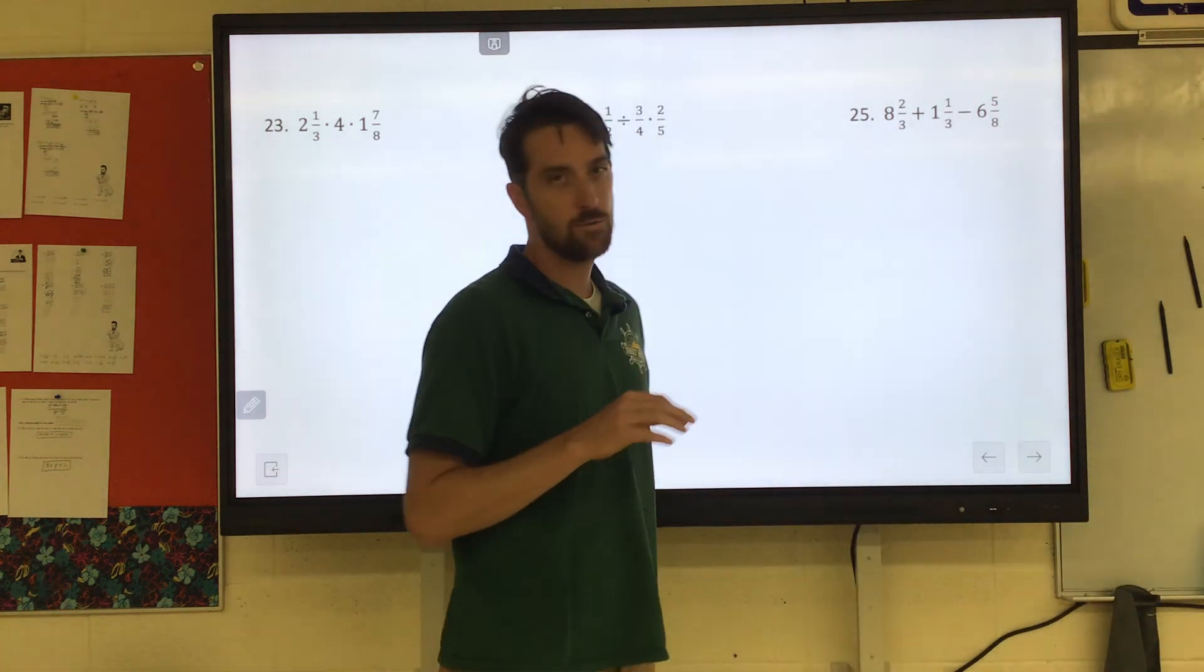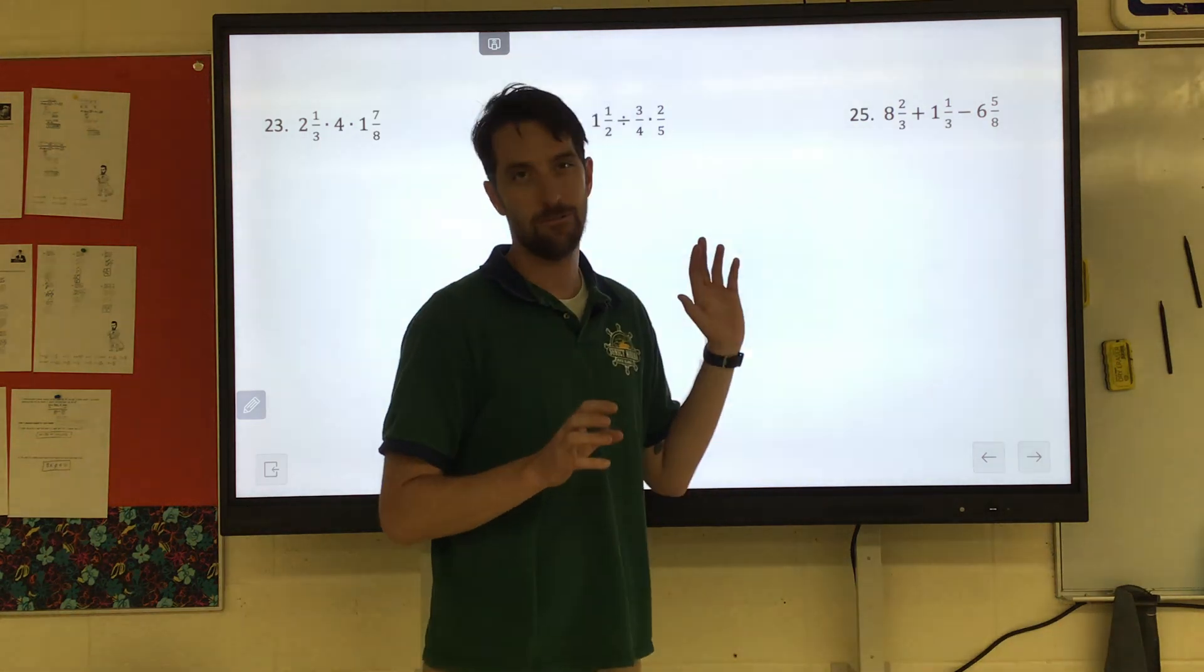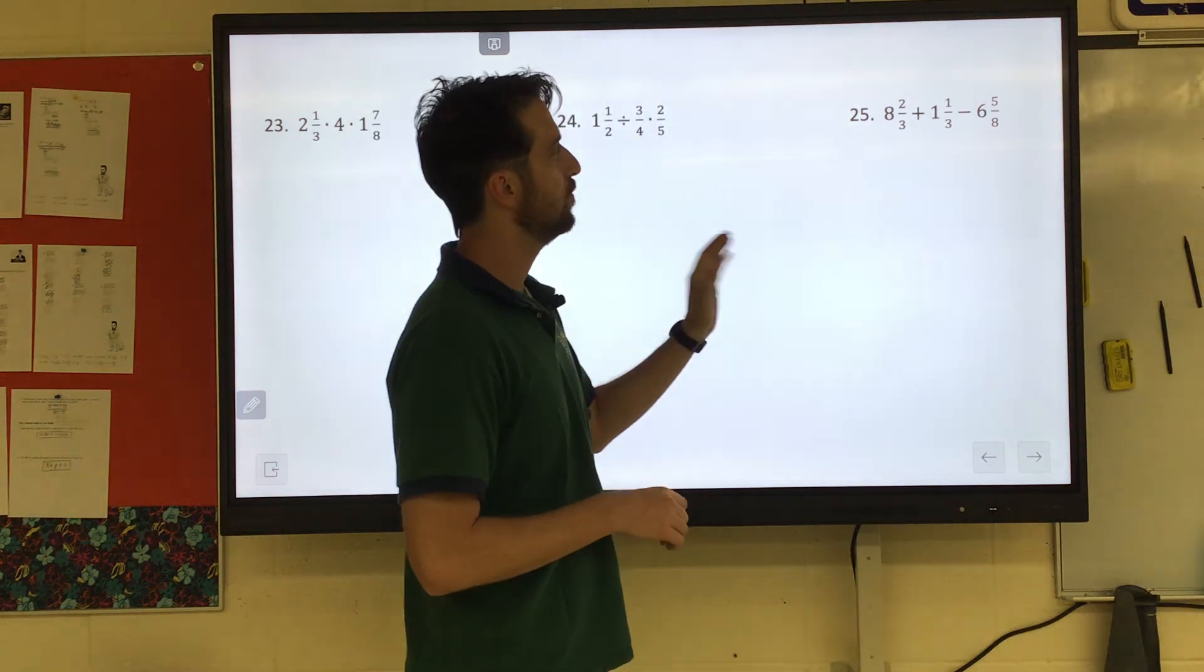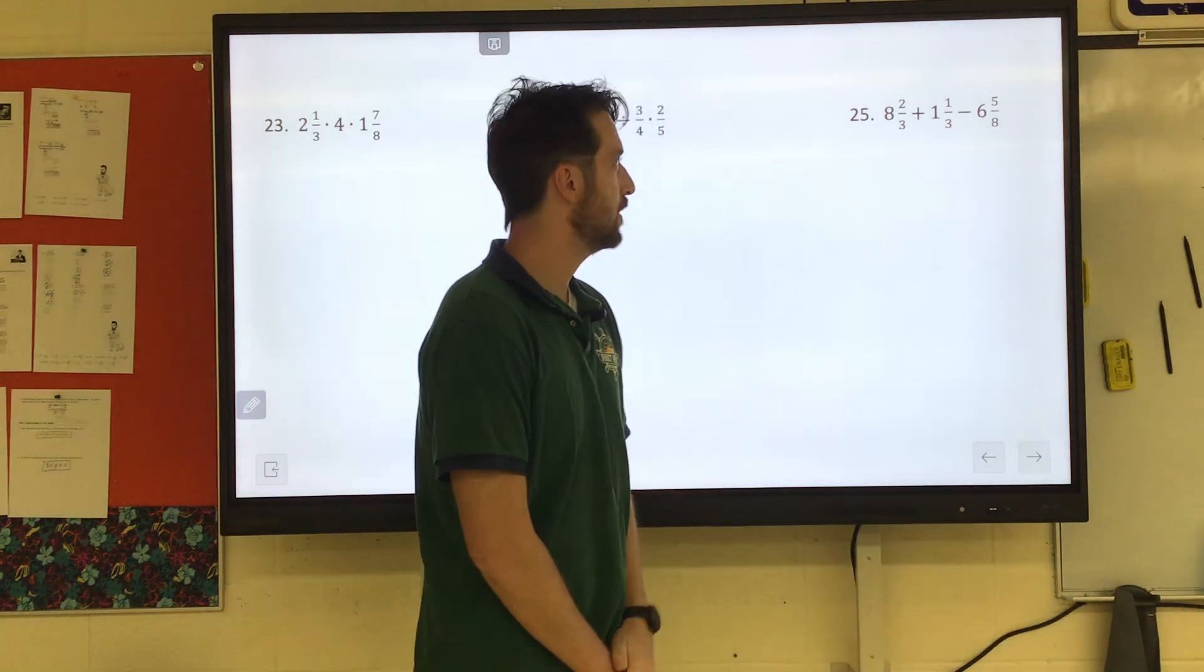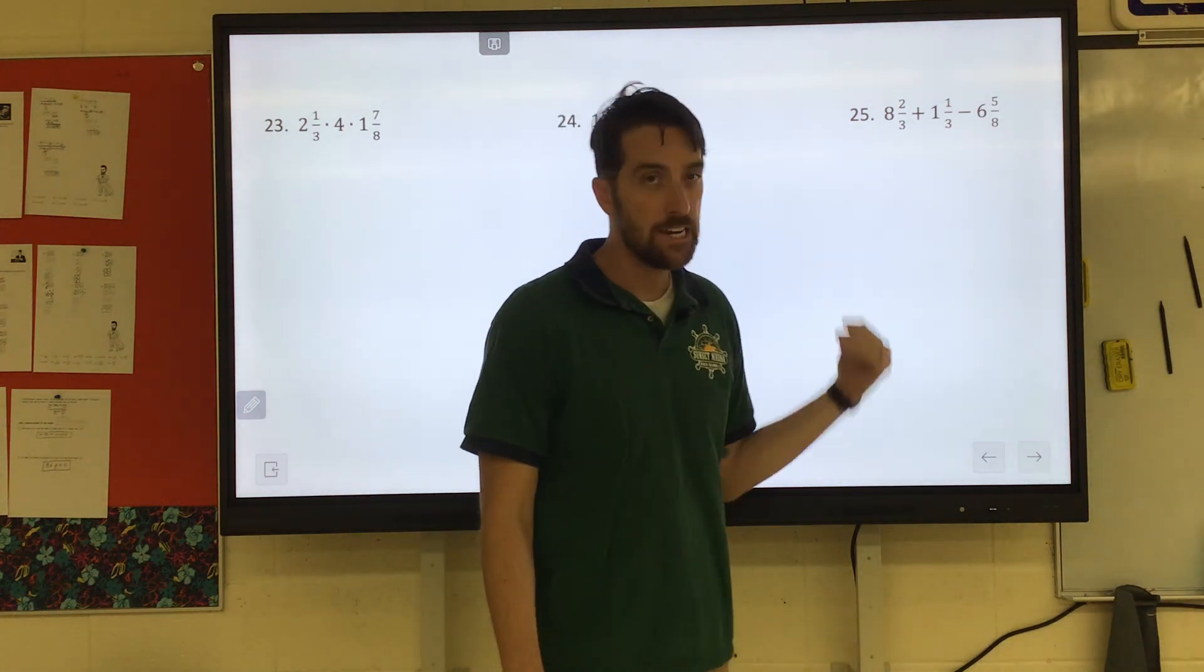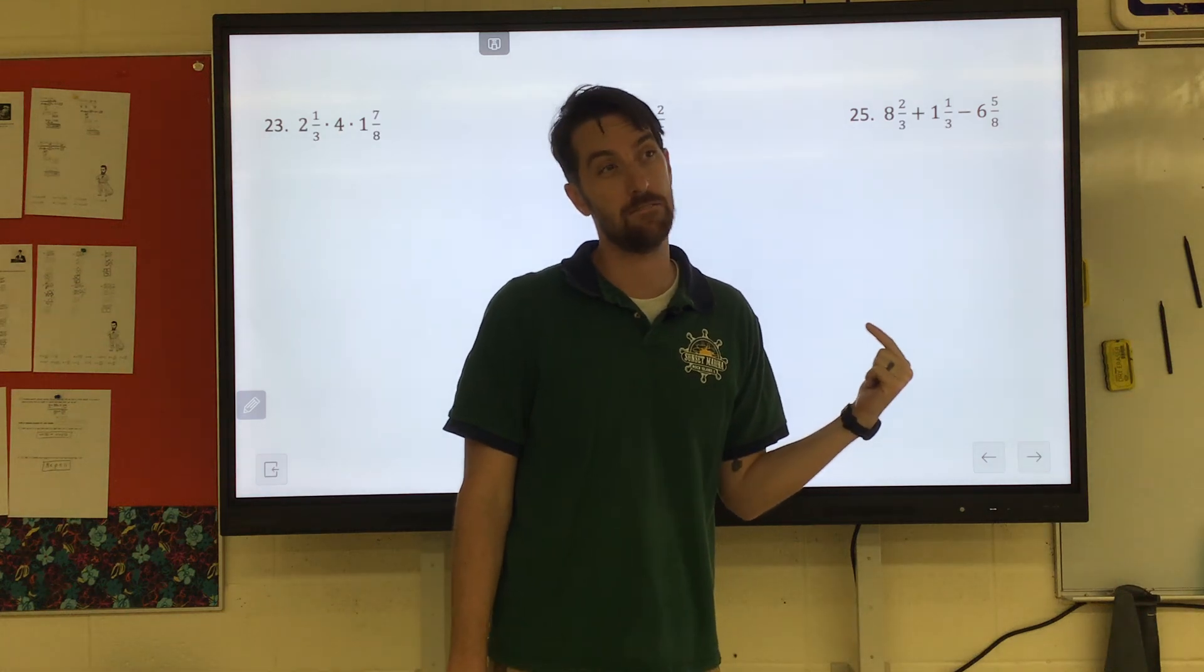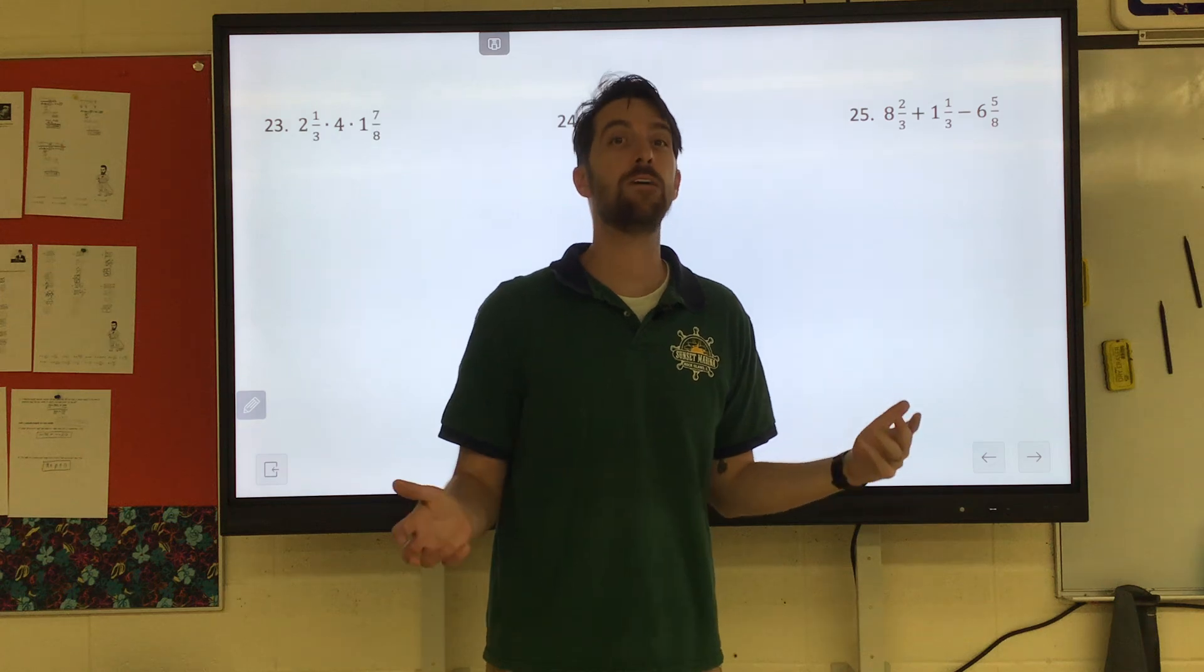Let's actually start with 25, because adding and subtracting fractions was the first thing that we covered. Remember, when you're adding or subtracting, you have to have a common denominator. It doesn't matter when you're multiplying or dividing. But adding and subtracting has to be the same denominator. So if I'm looking at 25, I see a denominator thirds and eighths. So we're trying to think in our heads, what's the number that three and eight can all go into? You're like, 24? OK, so we can make them all 24ths.